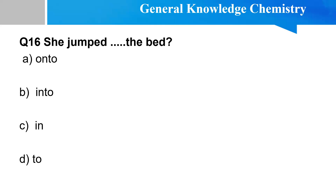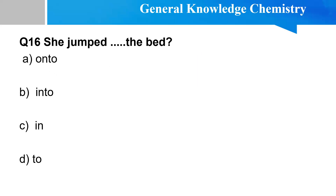Correct proposition: She jumped ___ the bed. Options: to the bed, onto the bed, into the bed. The right option is 'onto' — she jumped onto the bed. The proper preposition to use is 'onto'.